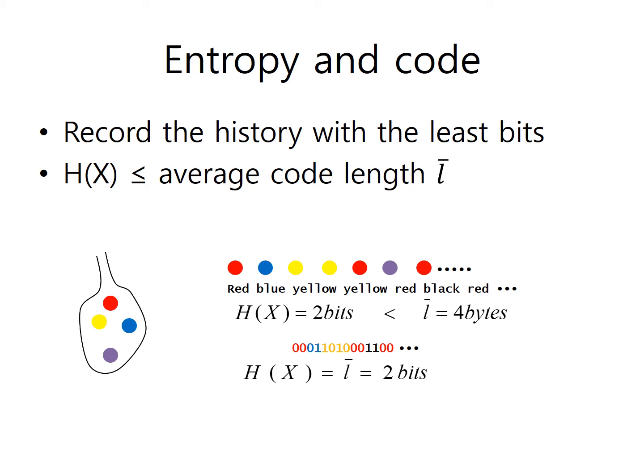Each code length is 2 bits in this case. You can record history in much less space than writing red, blue, yellow, violet in text format. Instead of writing it in text format, we can use code like this, 2-bit code for each case. In this case, the average of the code length is the same as the entropy, so it is a very good codeword.